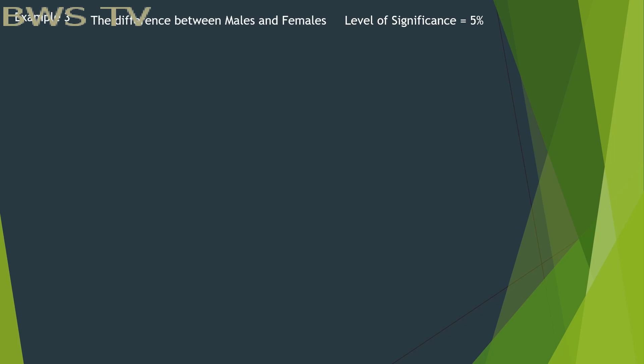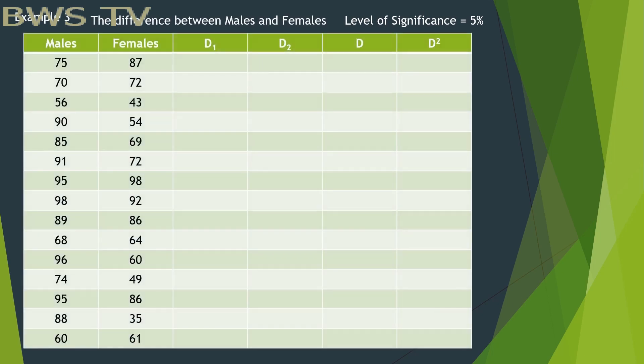Third example, the difference between males and females. First, the ranking of the two columns. Then, the subtraction phase.